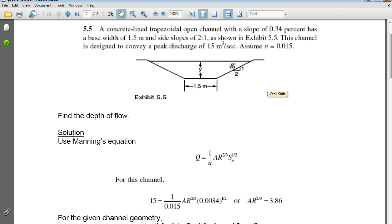So we have for our givens a concrete-lined trapezoidal open channel with a longitudinal slope of 0.34 percent. In all of our equations, when we talk about percents, we have to add on the double zero, so the slope here is really 0.0034. The base width of the thing is 1.5 meters. The side slopes of the thing is 2:1, 2 horizontal to 1 vertical. And the channel is designed to convey a peak discharge of 15 cubic meters per second. They give us a Manning's n that corresponds to the concrete lining at 0.015. They want us to find the depth of flow, the Y dimension.